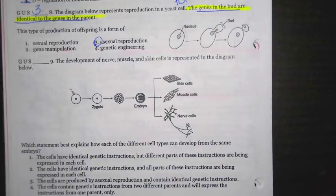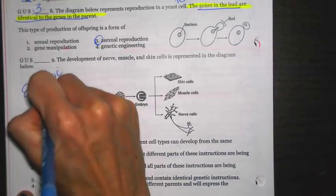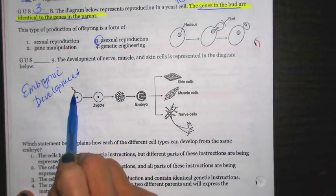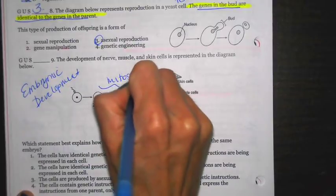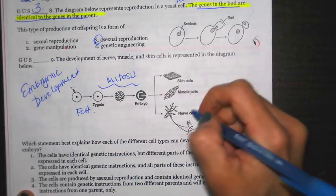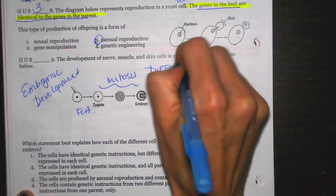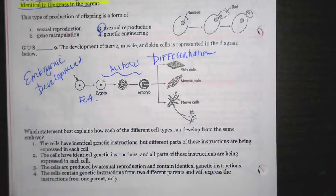This question here, the development of nerve, muscle, and skin cells is represented in the diagram below. We've got what would be embryonic development. Note here, fertilization is occurring, formation of a zygote, a bunch of mitosis is happening. Over here, all these cells are getting their specific jobs. When you get your specific job, remember that's called differentiation. Which statement best explains how each of the different cell types can develop from the same embryo? So more or less, what we're doing is we're looking for the definition of differentiation. Number one says the cells have identical genetic instructions, but different parts of the genes are being expressed in each cell. This is mitosis. Each one of these cells inside your body, every single cell in your body, is an exact copy of each other.